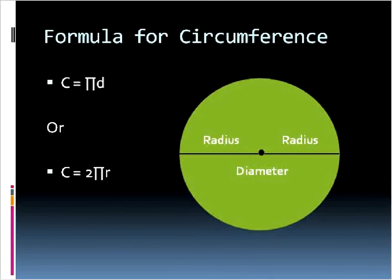The way that we find circumference is that we need either the radius or the diameter of a circle. When we have the diameter of a circle, the distance from one end all the way to the other, that's the diameter. If we have the diameter, we multiply that times pi, and that will give us the circumference.